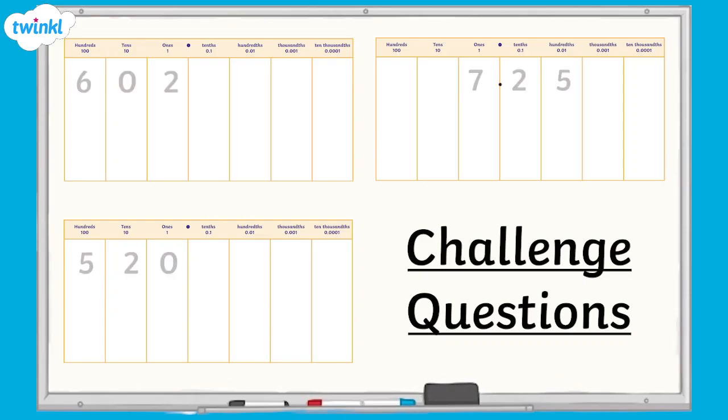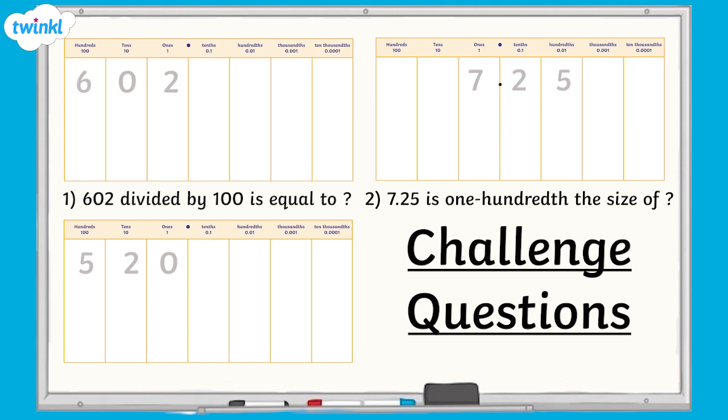Take a look at these place value charts to help you. Use the charts to try and answer the questions on the screen. Question 1: 602 divided by 100 is equal to what number? Question 2: 7.25 is one hundredth the size of what number?